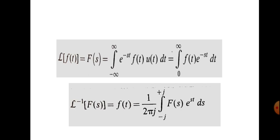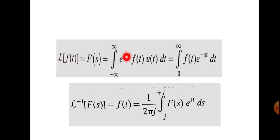The Laplace transform of a function f(t) is defined as L{f(t)} = F(s), given by the integral from minus infinity to plus infinity of e^(-st) · f(t) · u(t) dt. Since u(t) is the unit step function defined on [0, ∞) with value 1, the equation simplifies to the integral from 0 to infinity of f(t) · e^(-st) dt.